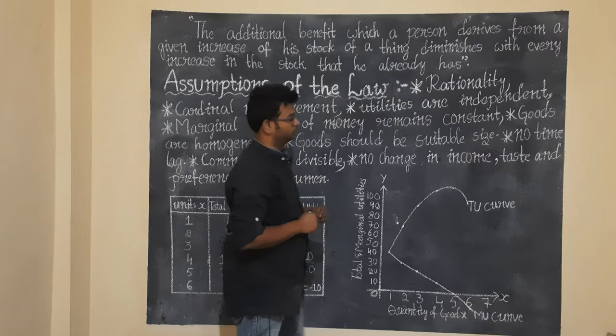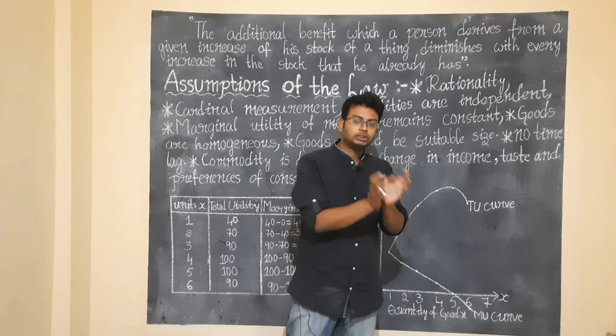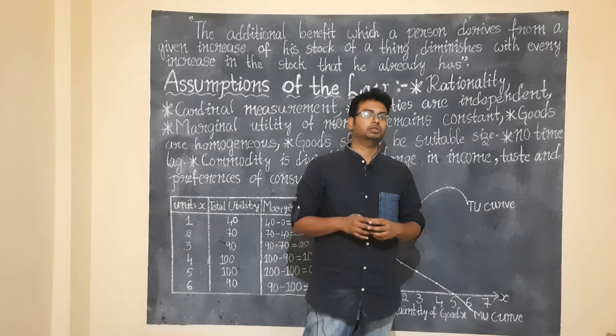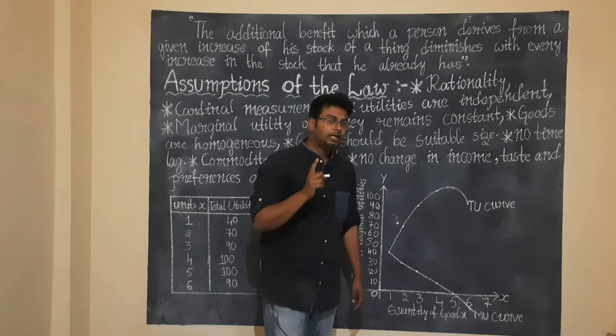Now let's look at the assumptions of DMU. Every law has logical assumptions, and these conditions must be present for DMU to apply. If these conditions are not met, DMU will not apply. Let's go through the assumptions. First assumption: Rationality.